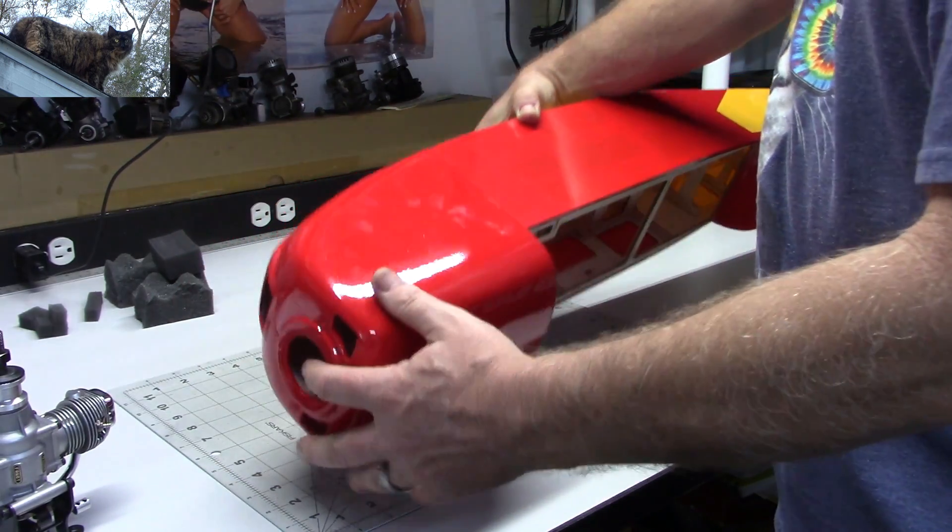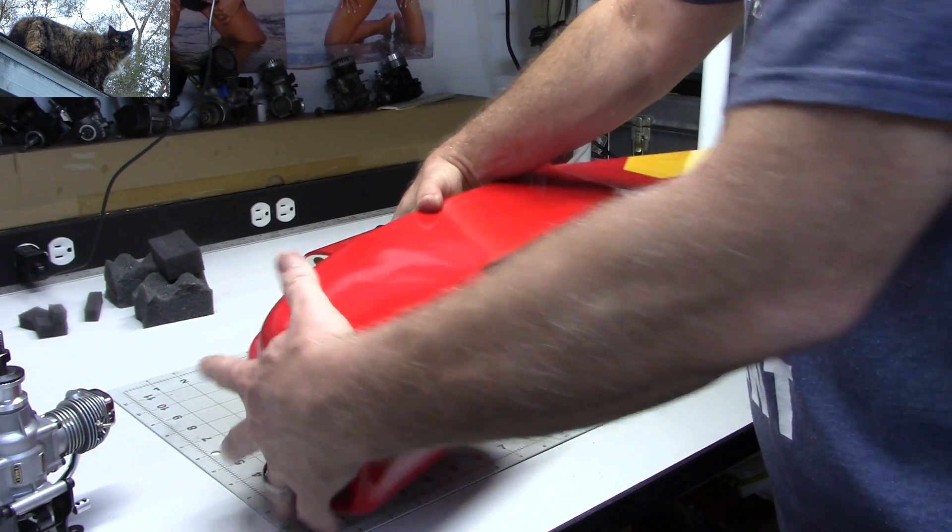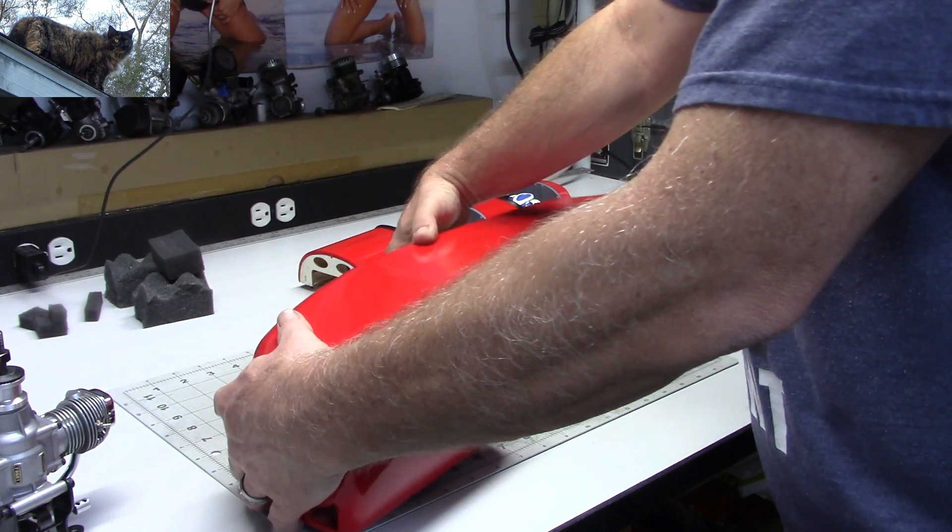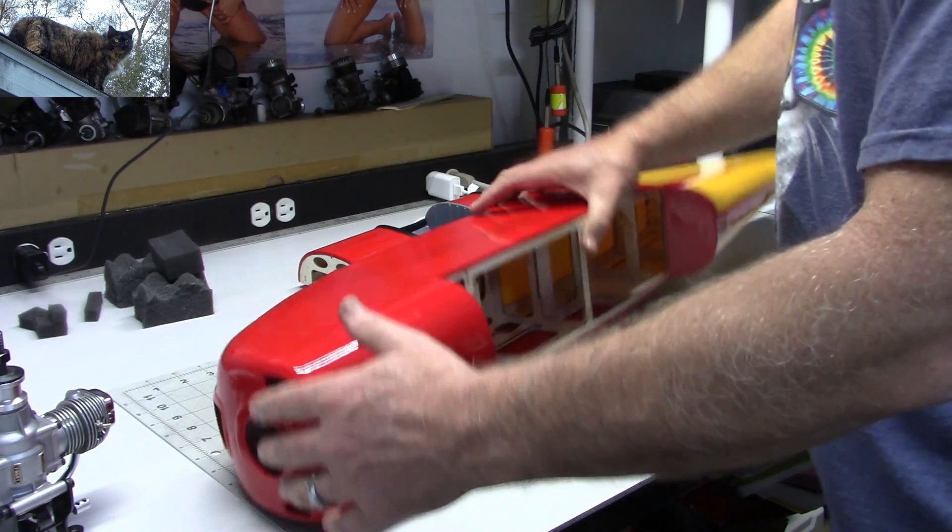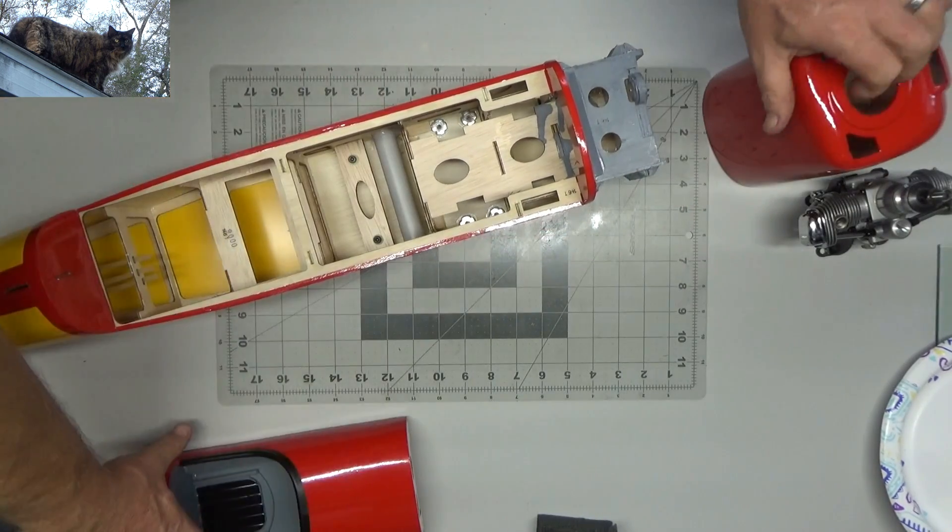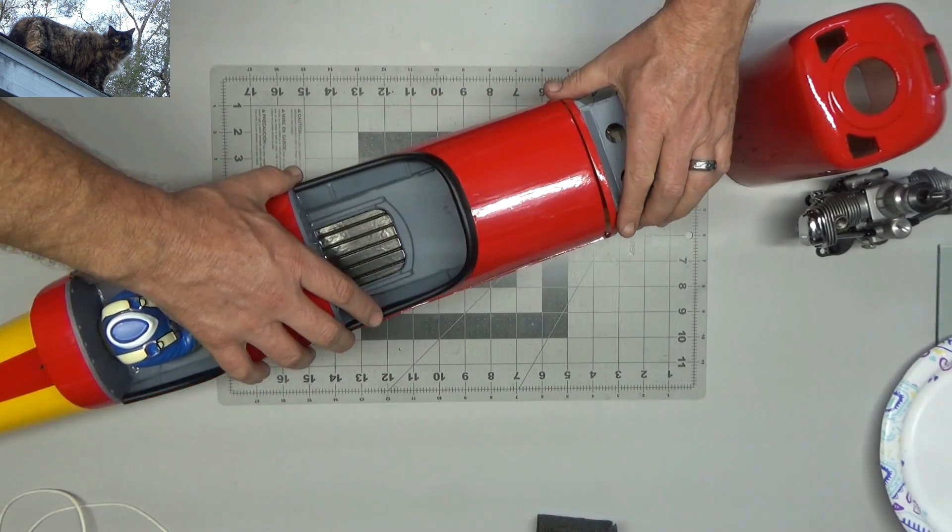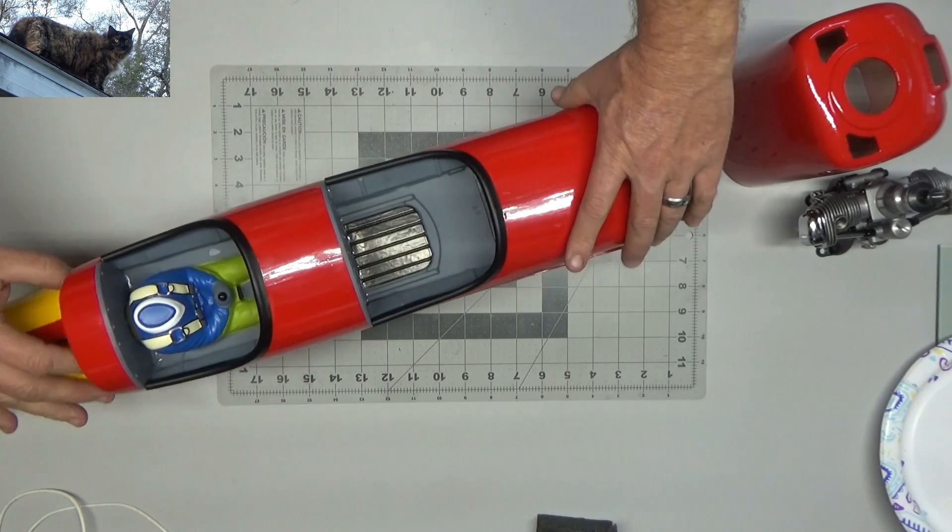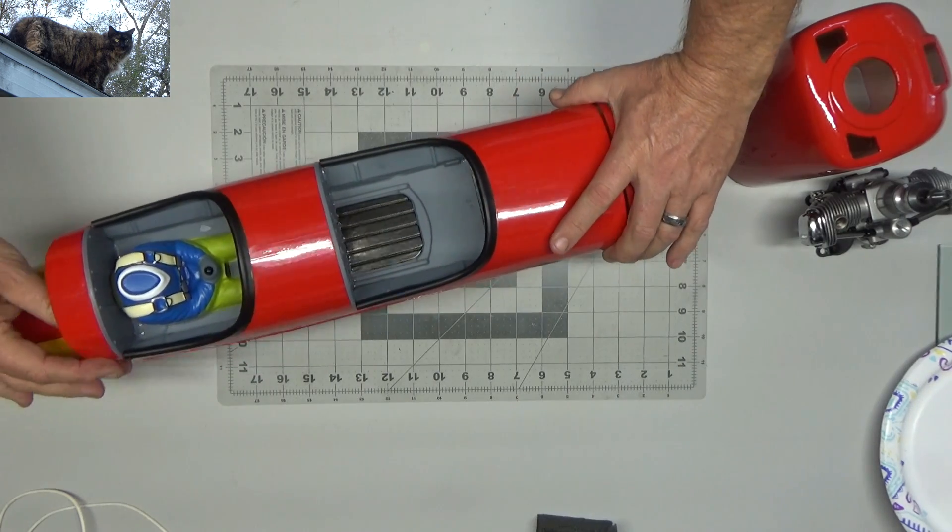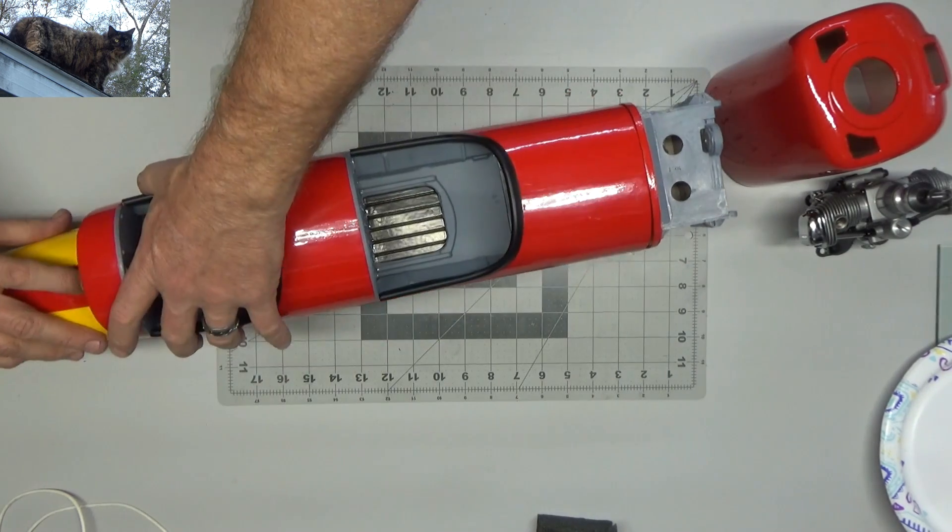So that looks about right. Right about there is about as far on as it looks like it goes. So I want to try and put this nose piece back on here, the top cover. Let's see if we can't do a little bit of fitment here. Let's see what's going to be necessary for this engine.